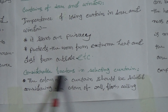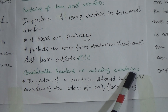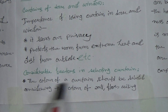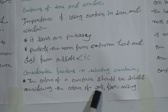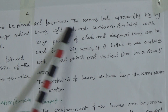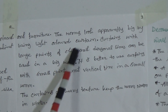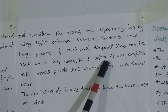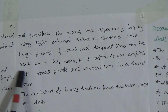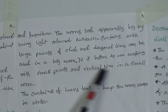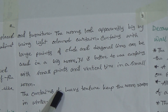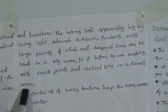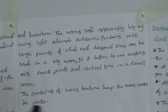Considerable factors in selecting curtains: the color of a curtain should be selected considering the color of the wall, floor, ceiling, and furniture. Rooms look apparently bigger by using light-colored curtains. Curtains with large prints, checks, and diagonal lines can be used in a big room. It is better to use curtains with small prints and vertical lines in a small room. Curtains of heavy texture keep the room warm in winter.